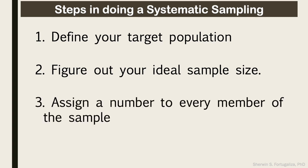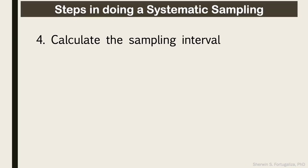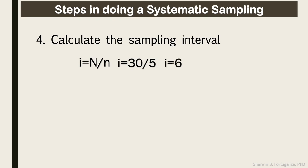Third, you need to assign a number to every member of the sample. Fourth, you need to calculate the sampling interval. You may use this formula: I is equal to N over n, where capital N stands for your population and small n stands for your desired sample size. For example, if the population is 30 and your desired sample size is 5, the sampling interval is equal to 6.